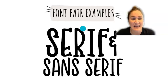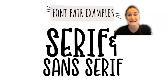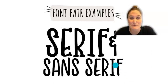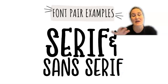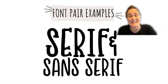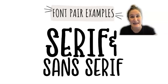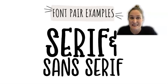A serif font has little edges on it — all the edges have a little lip on them. Sans serif has no lips; it's very smooth and doesn't have that extra little piece. Typically serif fonts are a little bit more formal. When you pair a serif and a sans serif font, they typically go really well together. A lot of times you can get these in a bundle where the designer has made the same font in both options. Let's look at an example of this in action.